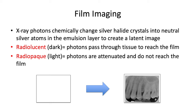So how does this actually work? X-ray photons chemically change those silver halide or silver bromide crystals in the emulsion layer into neutral silver atoms, creating what's called a latent image. The latent image is invisible — it has ionized silver atoms focused into certain areas. Then all of the metallic silver is later converted to a visible image through chemical processing.